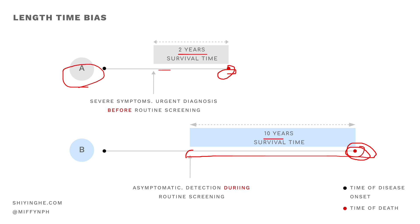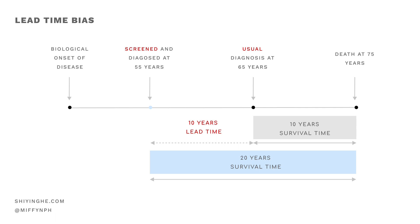People might say screening improved survival, when in reality it's because patient A had a more severe type of cancer — that's why he came before the screening time. With length time bias, the problem is you have two different severities: one so severe he came before screening, and another with a more benign disease. You're comparing two different things and concluding screening prolonged survival — that's wrong, that's length time bias. With lead time bias, on the other hand, both patients have a slowly growing tumor of the same severity; the difference is that one was detected earlier than the other.